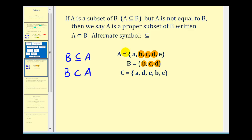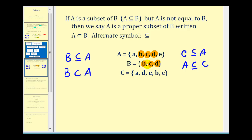Now looking at sets A and C, notice that set A contains A, B, C, D, E, and set C also contains A, B, C, D, E but in a different order. Since the order doesn't matter, we can say that C is a subset of A, or A is a subset of C. But since A and C are equal to each other, they are not proper subsets of each other.